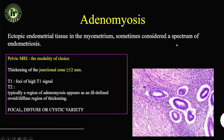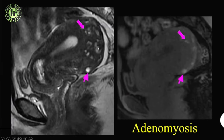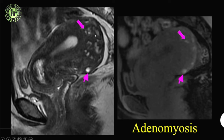Adenomyosis is part of the endometriosis spectrum but has a different mechanism. In adenomyosis, implants travel from the submucosal to the subserosal aspect. In deep pelvic endometriosis, implants start from the surface and go inward. These are independent phenomena — serosal deposits can occur even in a normal uterus. Adenomyosis is from submucosal outward; serosal deposits are from serosa inward — two separate, independent entities.